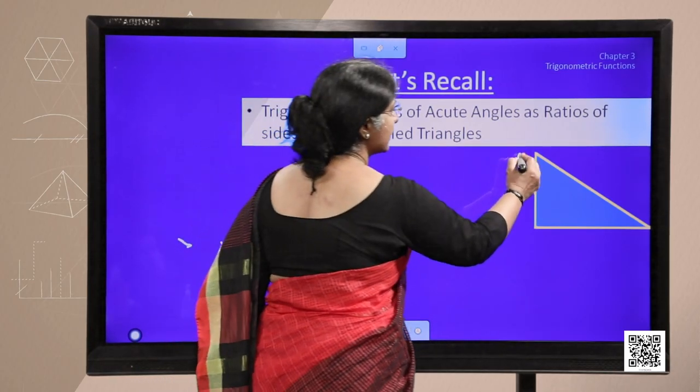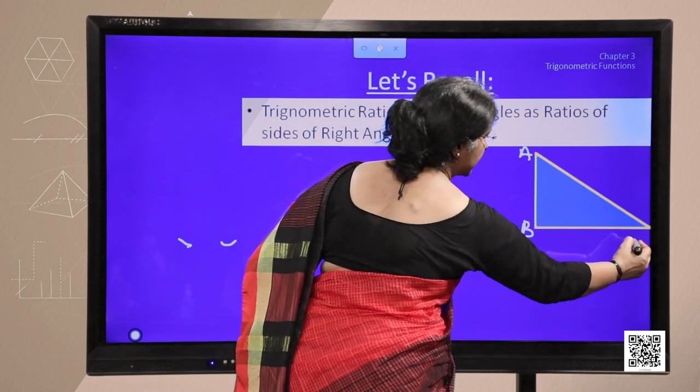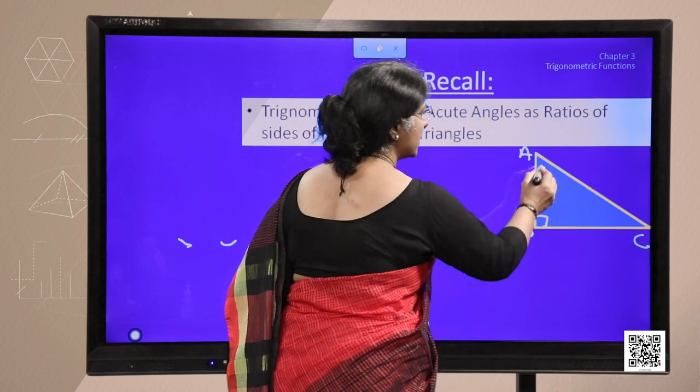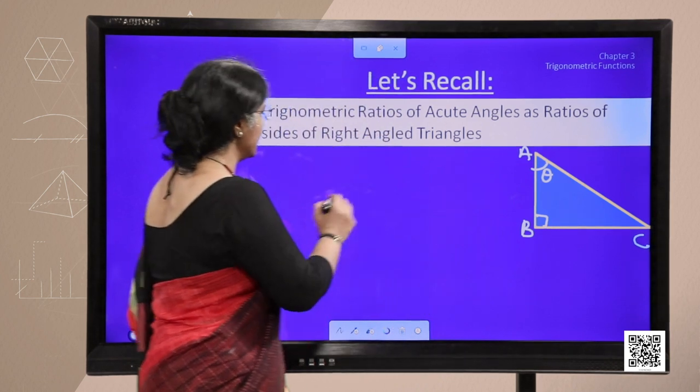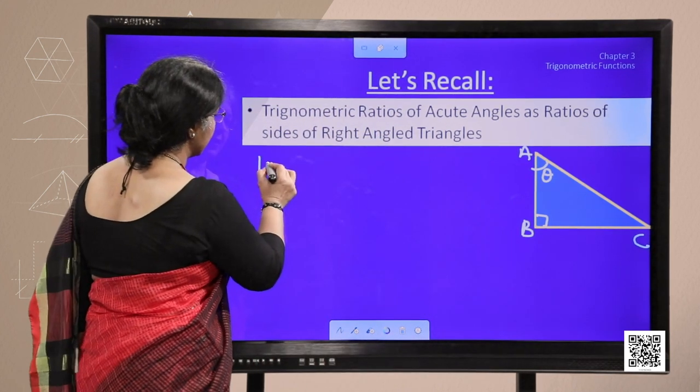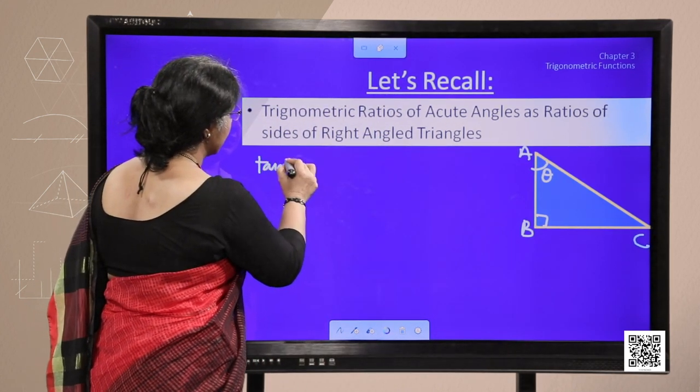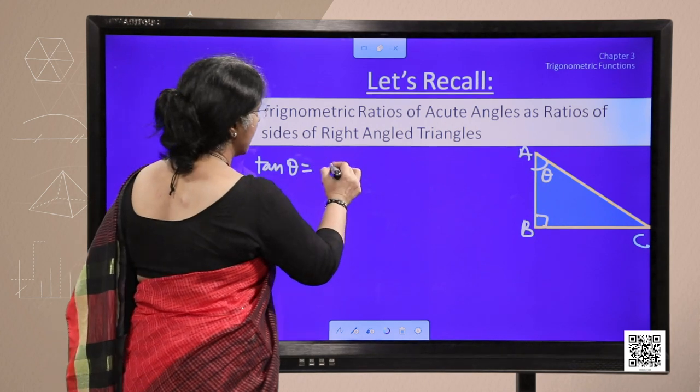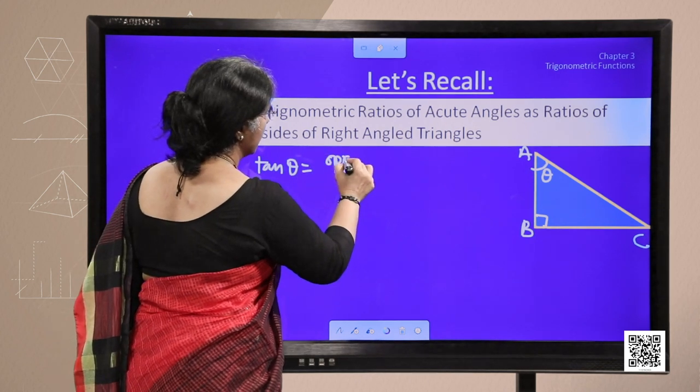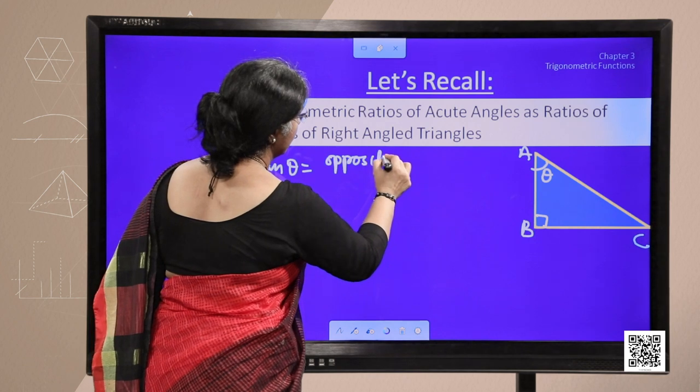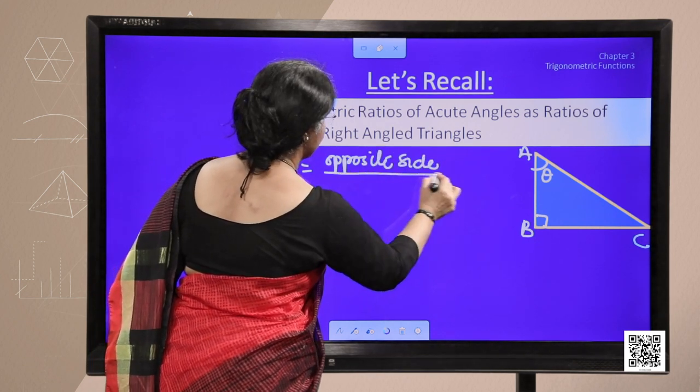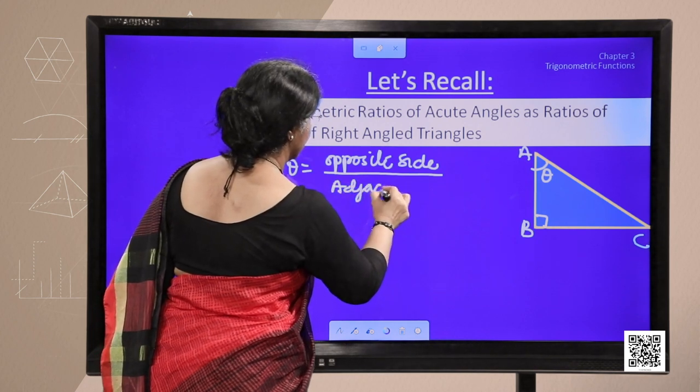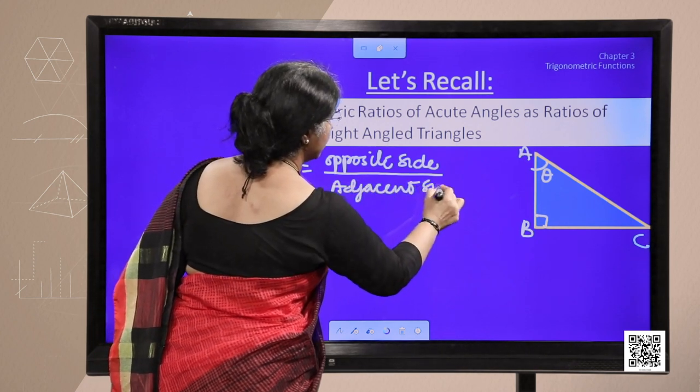Let us consider a right angle triangle ABC right angled at B. If we take one acute angle A as theta, then you must have learnt, tangent theta is equal to opposite side upon adjacent side.